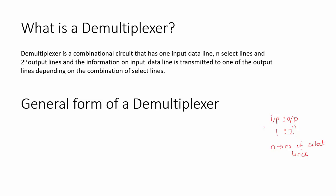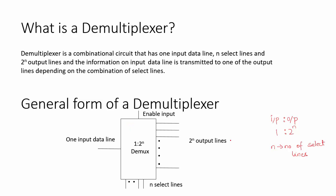So by using this general form, we can draw the block diagram of a demultiplexer. The block diagram of a demultiplexer is shown here. You can see that it has only one input data line and 2^n output lines.